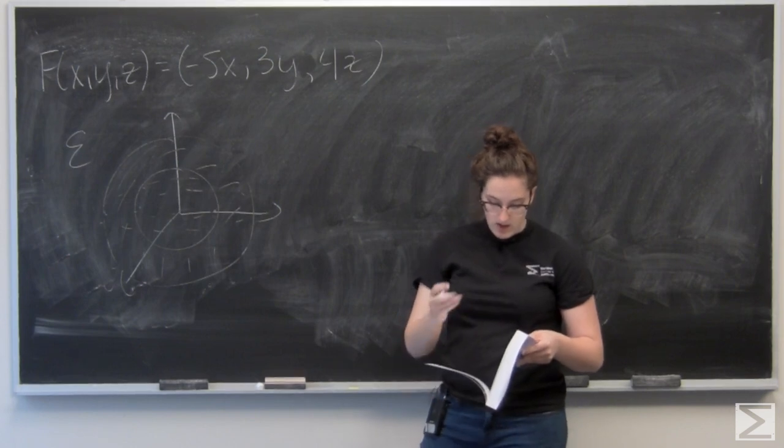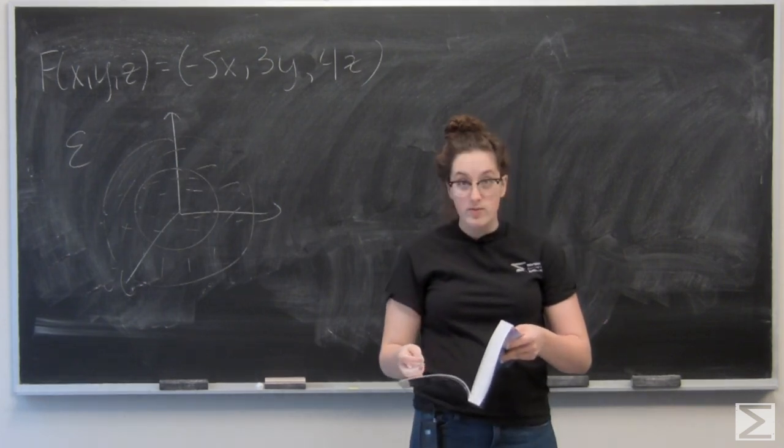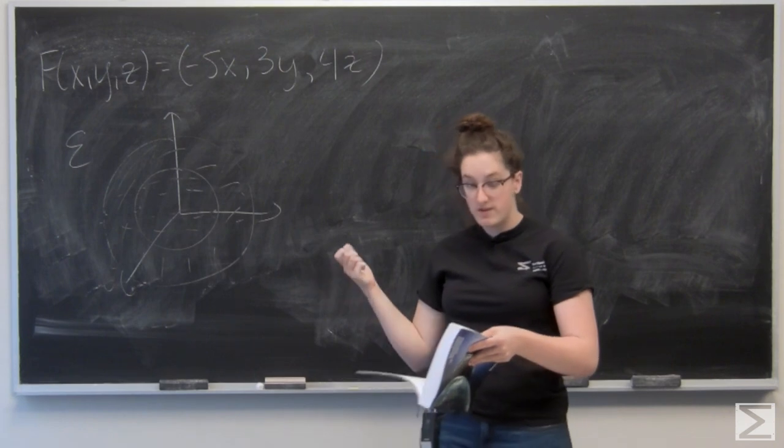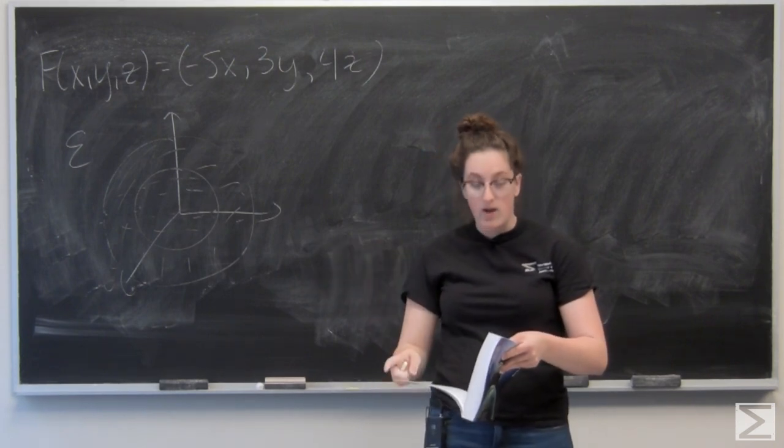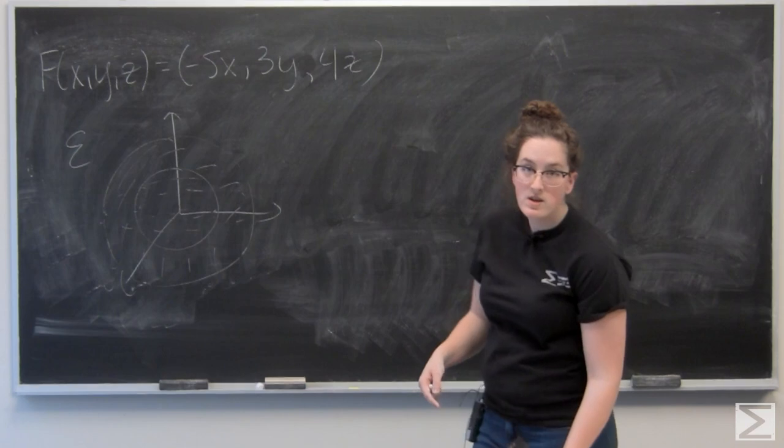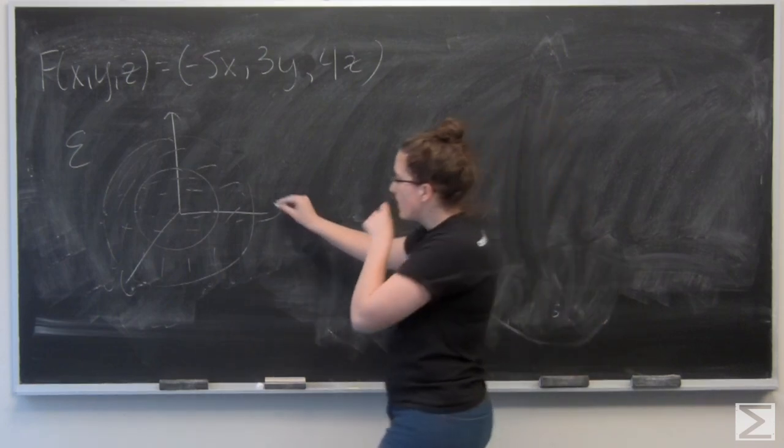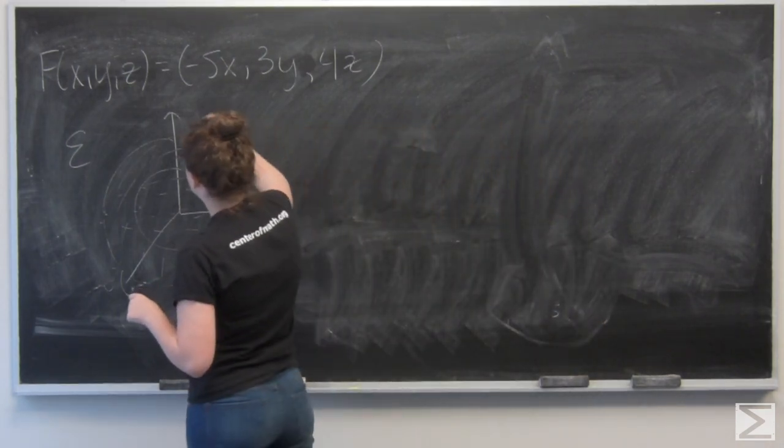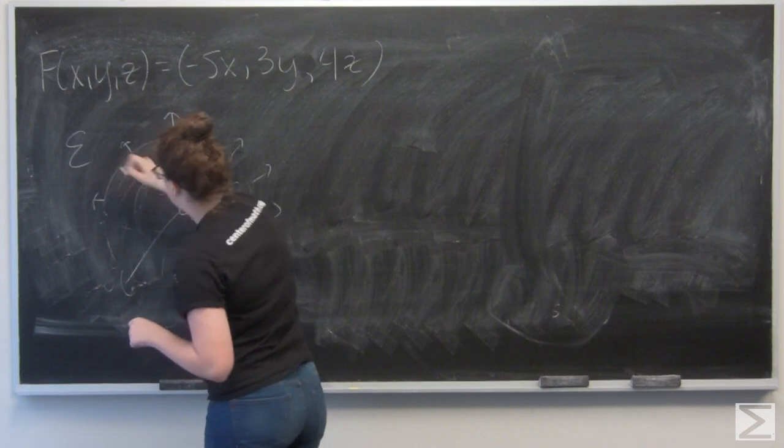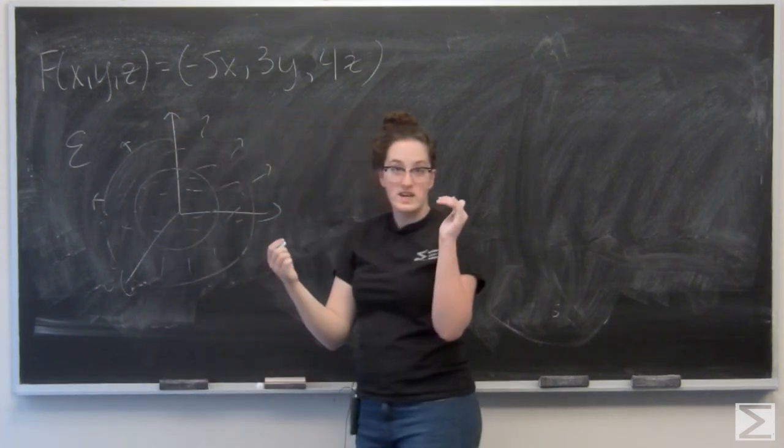And then I want to orient all pieces of the boundary of E outward from E and calculate the flux of F through E. So that means on the outside I want to orient out, and then on this inner boundary I want to orient in towards the origin.